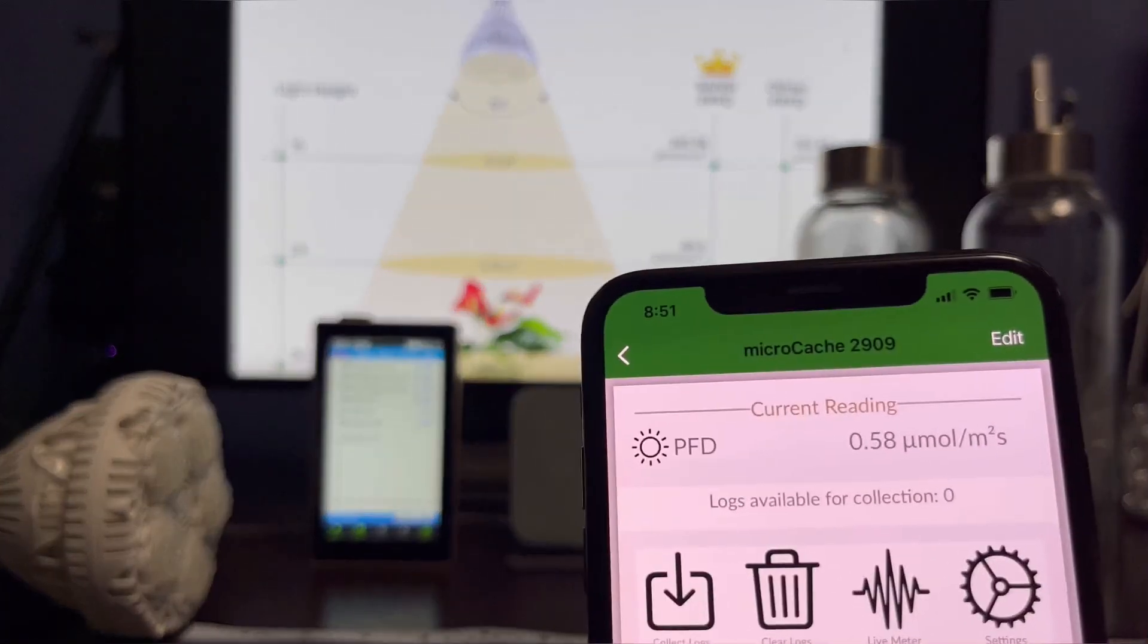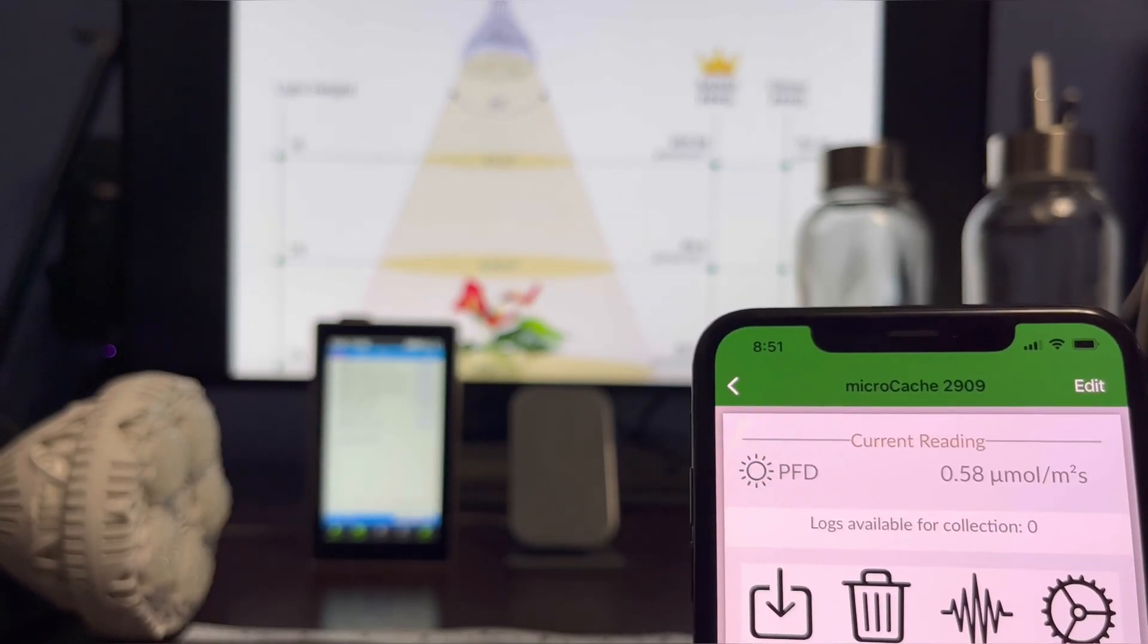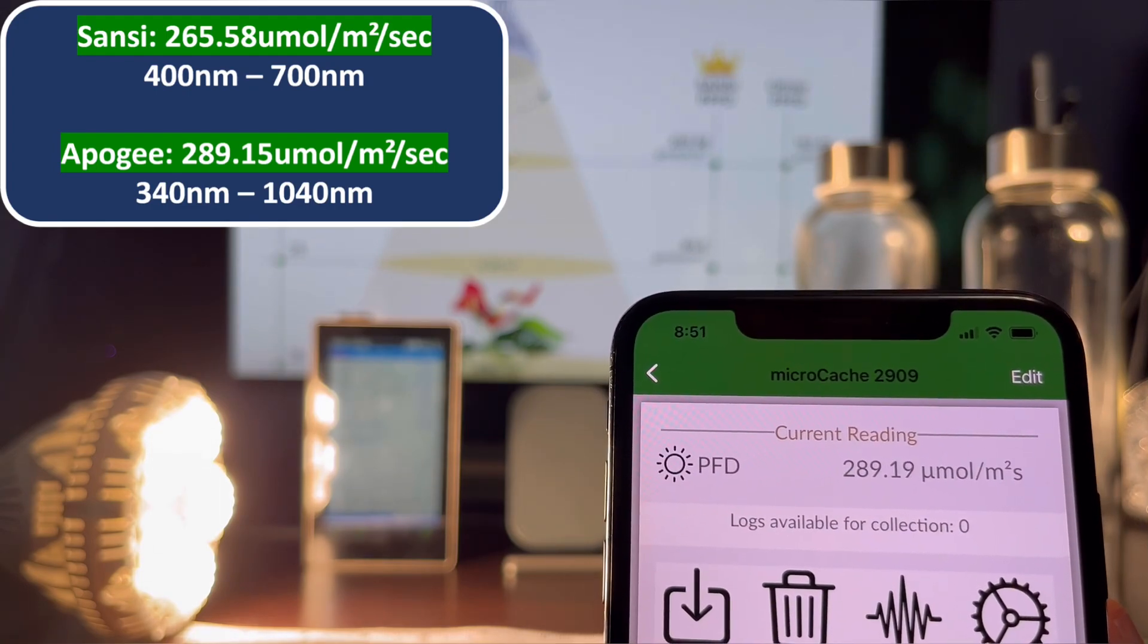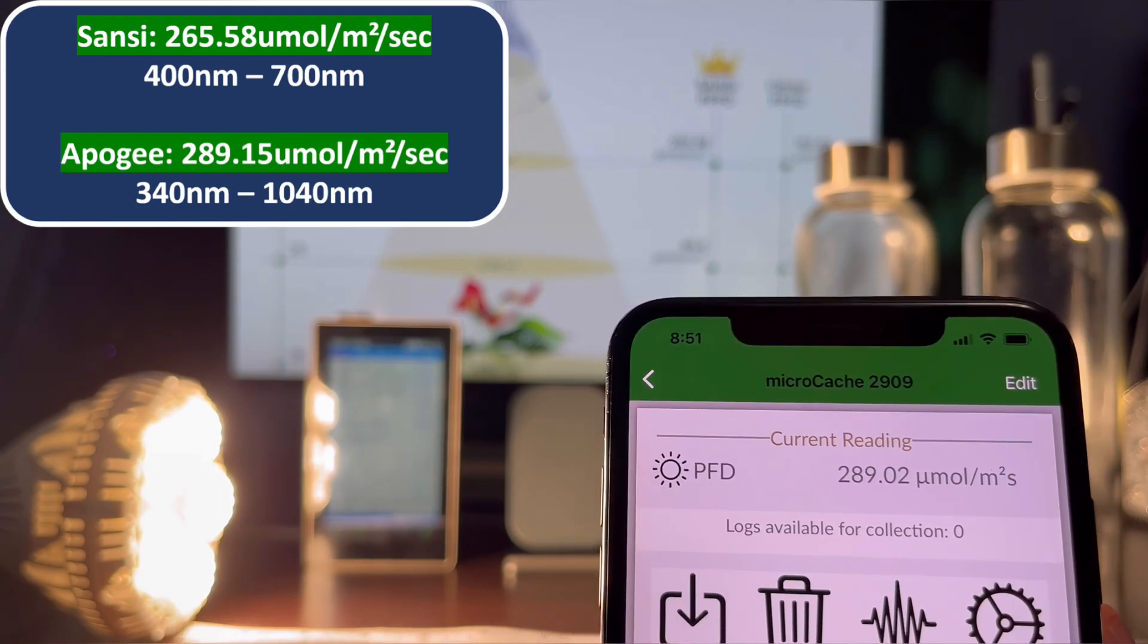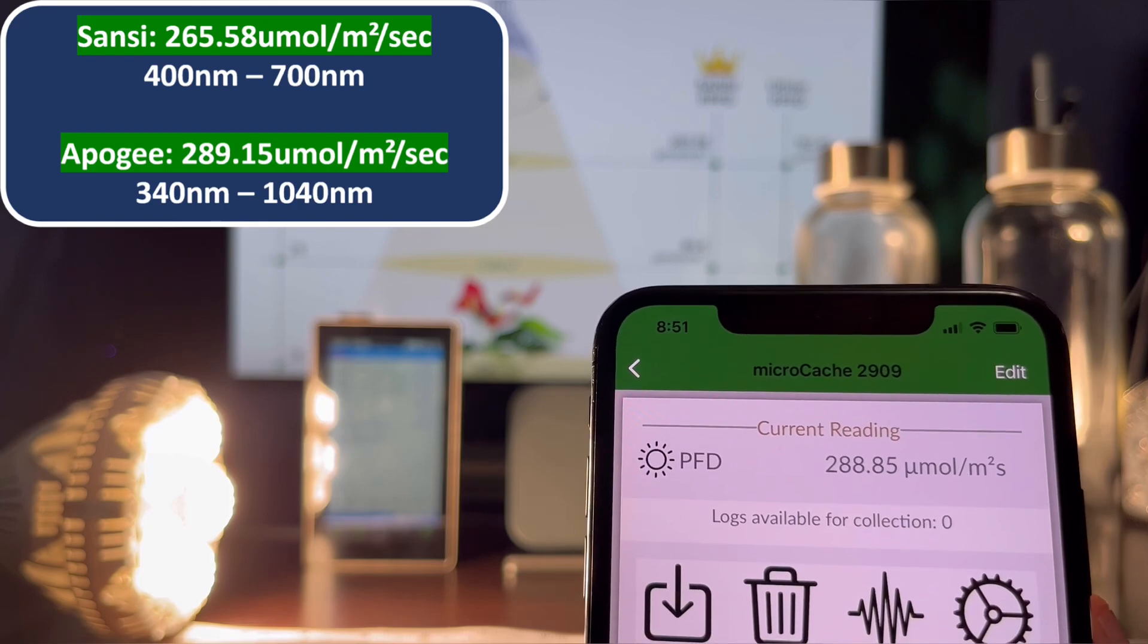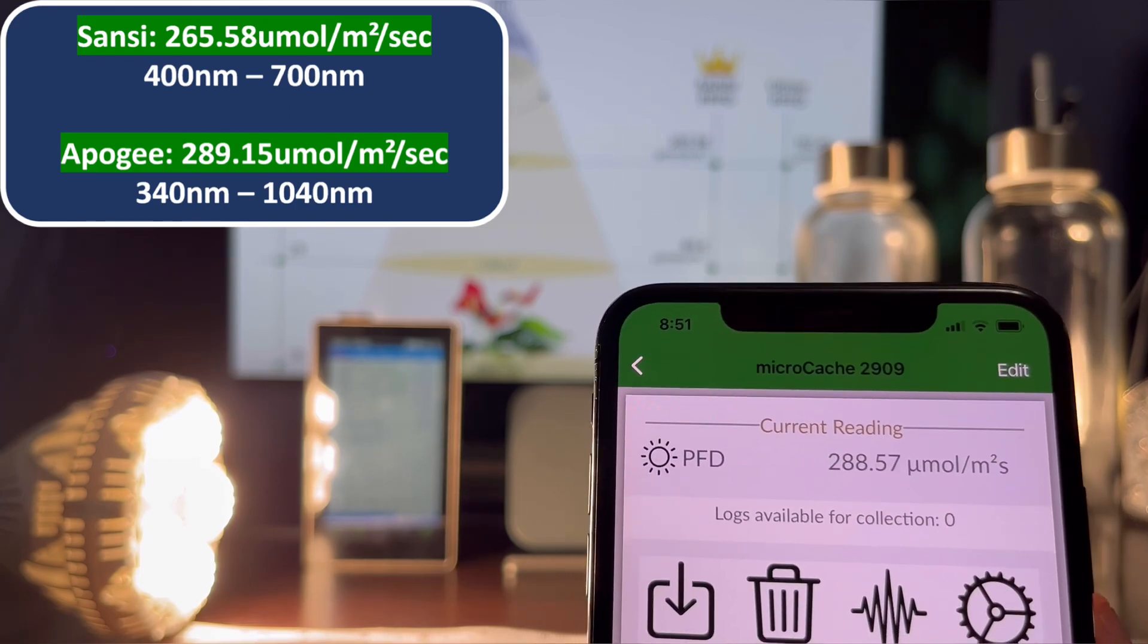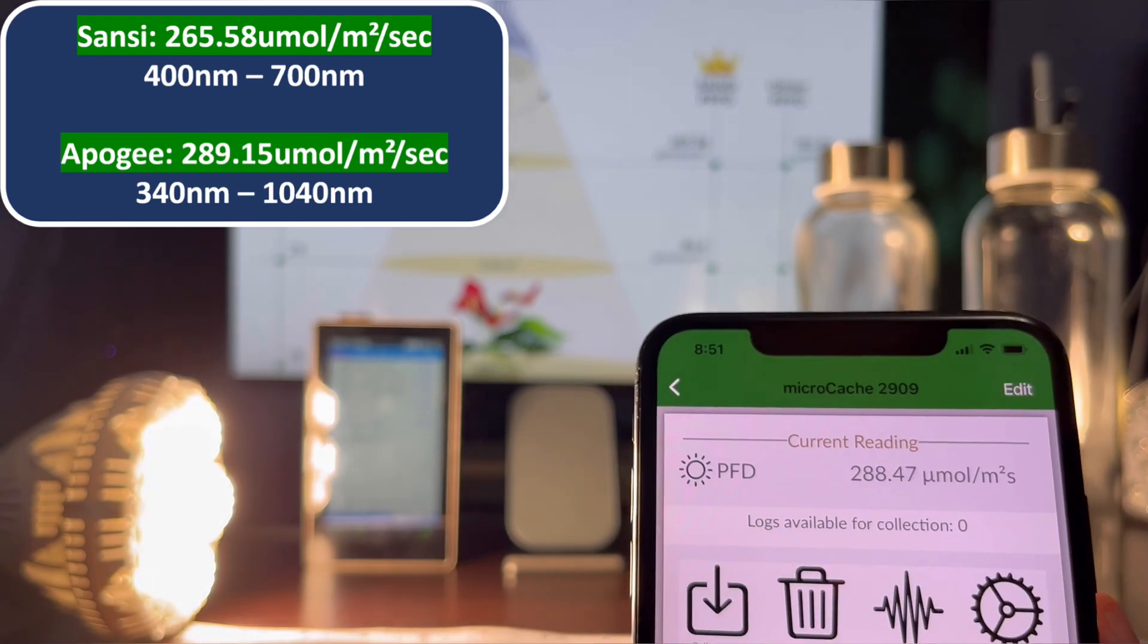Let me turn on the bulb and we'll see the measurements. It's measuring 289 micromoles per meter squared per second, which is pretty close to the expected 265. It measured more energy as this meter sensor goes beyond the normal PPFD spectrum.